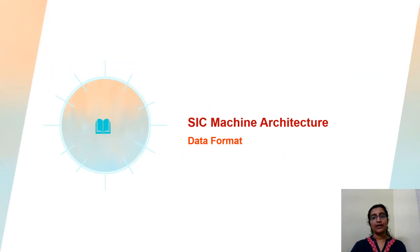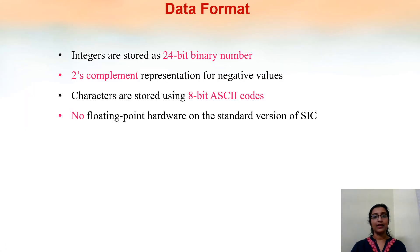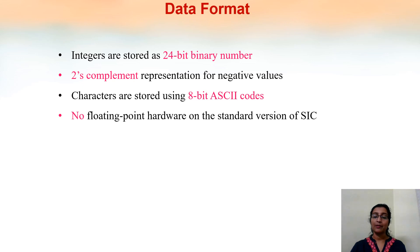Next is the data format. Data can be integer, character, or floating point. In the SIC processor, integers are stored as 24-bit binary numbers — a 3-byte number. Negative numbers are represented in two's complement form. Characters are stored using 8-bit ASCII code. However, floating point numbers are not used in this architecture, meaning decimal numbers are not represented.